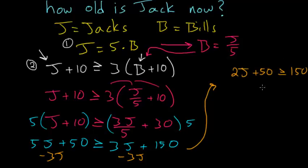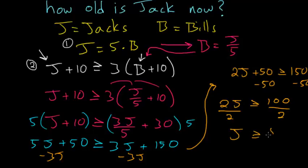And then getting the J's by themselves we can subtract fifty from each side so that we have two J that's greater than or equal to one hundred. And then dividing everything by two we have that J is greater than or equal to fifty.